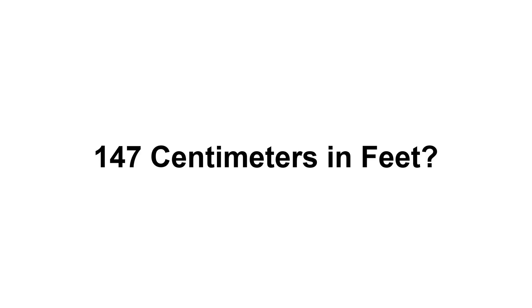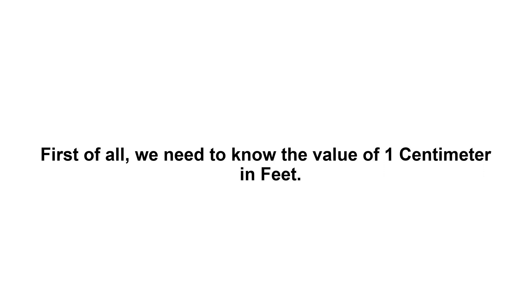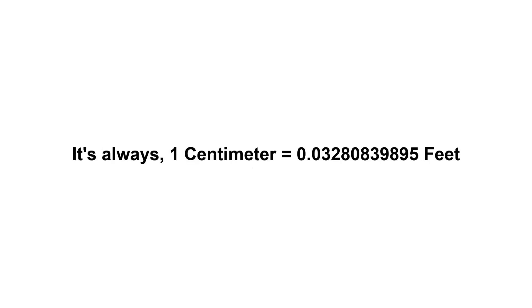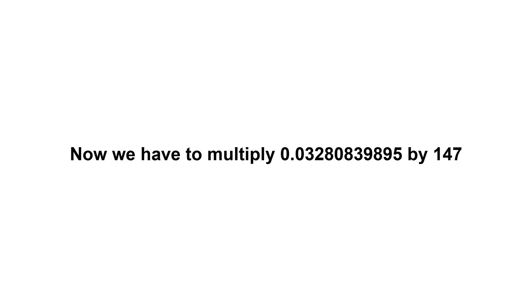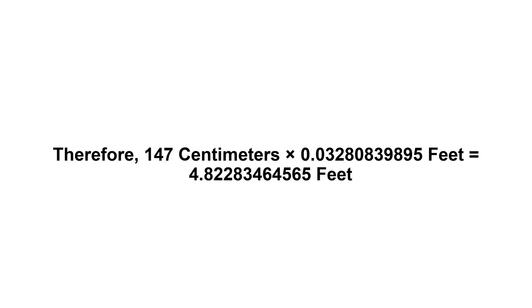147 centimeters in feet. First of all, we need to know the value of one centimeter in feet. One centimeter equals 0.03280839895 feet. Now we have to multiply 0.03280839895 by 147. Therefore, 147 centimeters times 0.03280839895 feet equals...